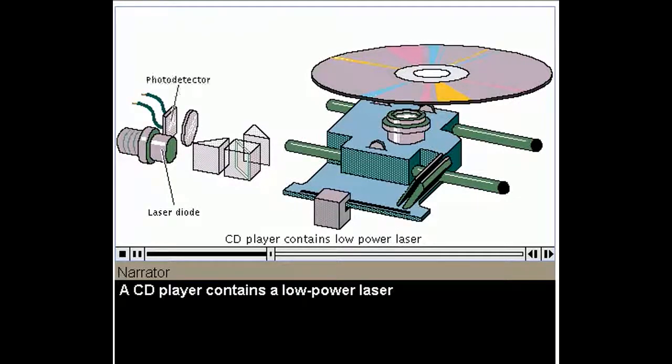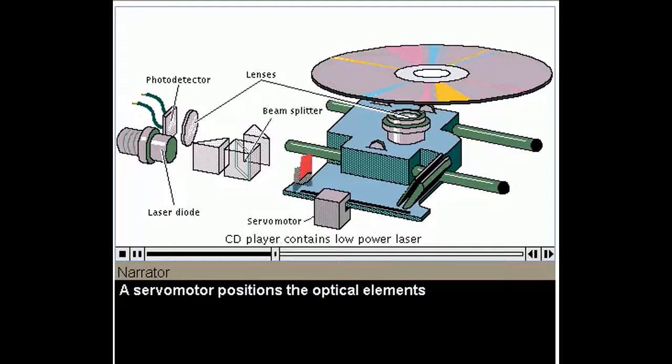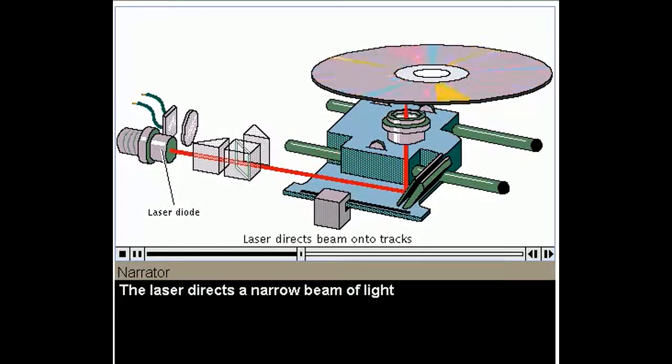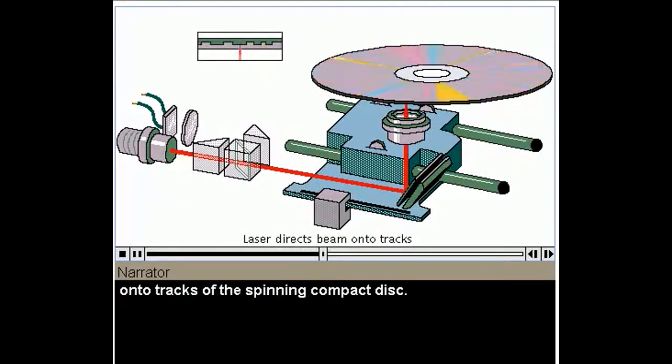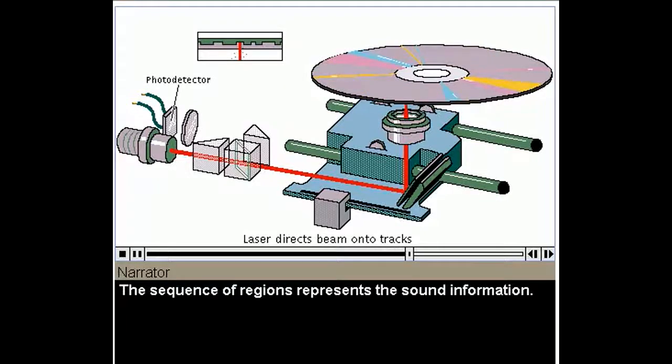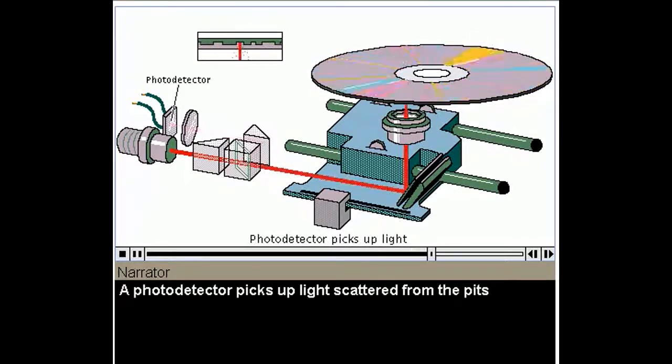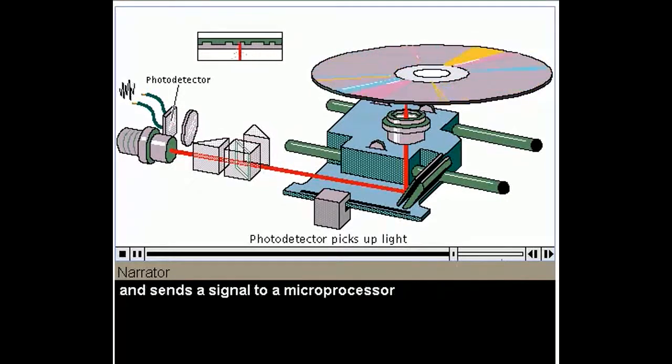A CD player contains a low-power laser and high-precision lenses and mirrors. A servo motor positions the optical elements to a track on the disc. The laser directs a narrow beam of light onto tracks of the spinning compact disc. Along a track, regions with pits scatter the light differently from regions without pits. The sequence of regions represents the sound information. A photo detector picks up light scattered from the pits and sends a signal to a microprocessor, which converts the signal to sound.